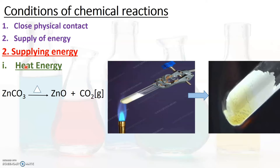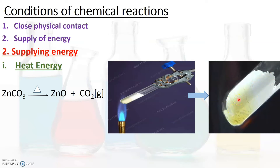We have already seen this example: zinc carbonate on heating gives the products zinc oxide and carbon dioxide gas. Zinc carbonate, which is initially white in color, undergoes a chemical reaction when heated, and the products formed are zinc oxide with the evolution of carbon dioxide gas. The zinc oxide formed is now yellow in color.